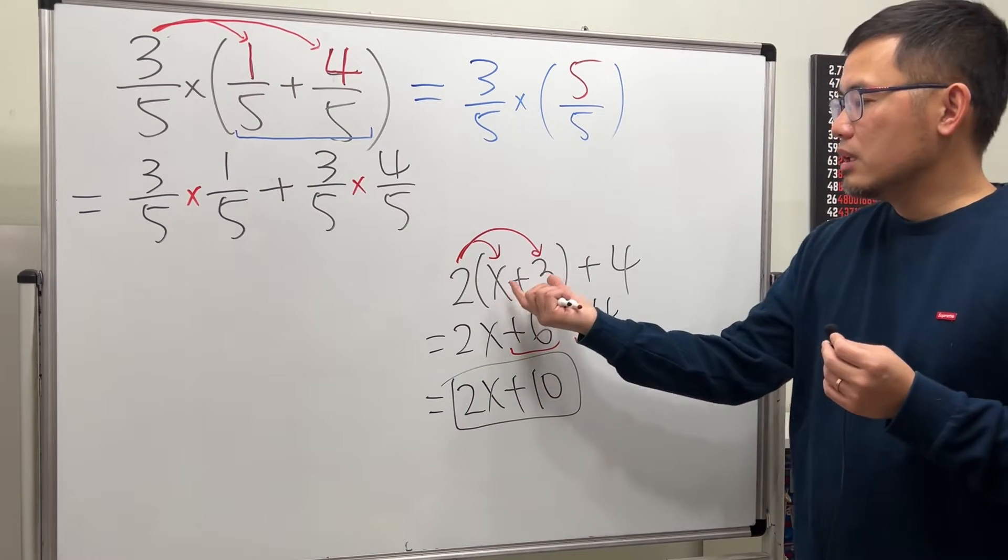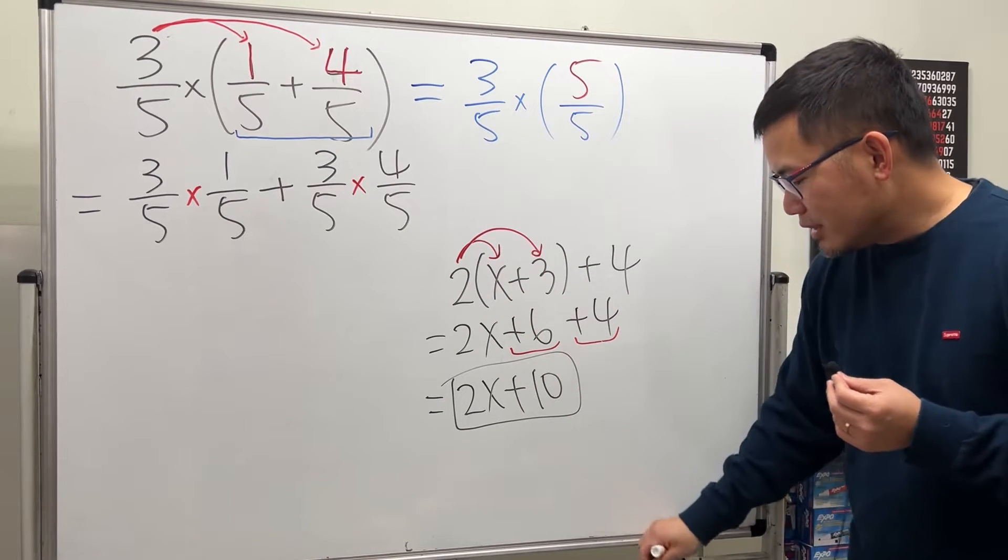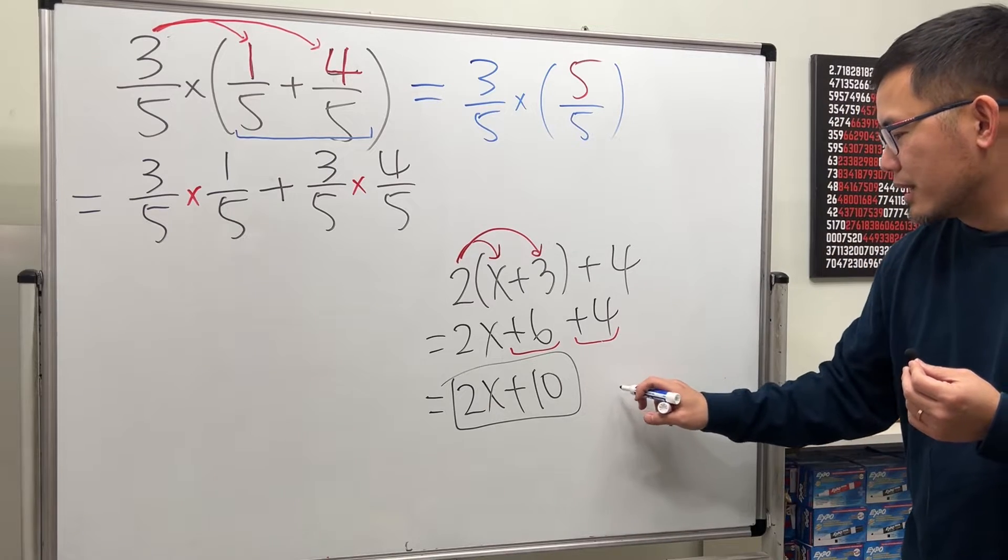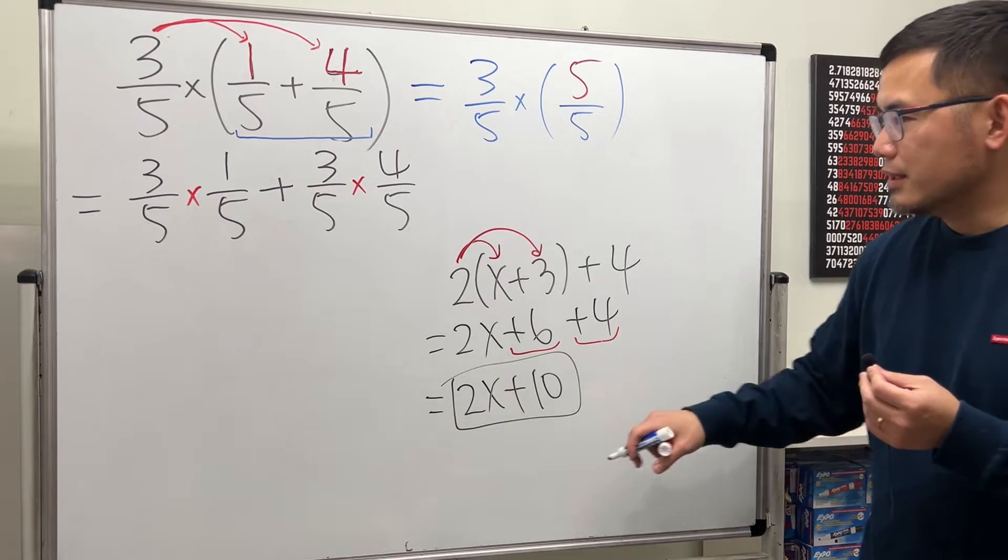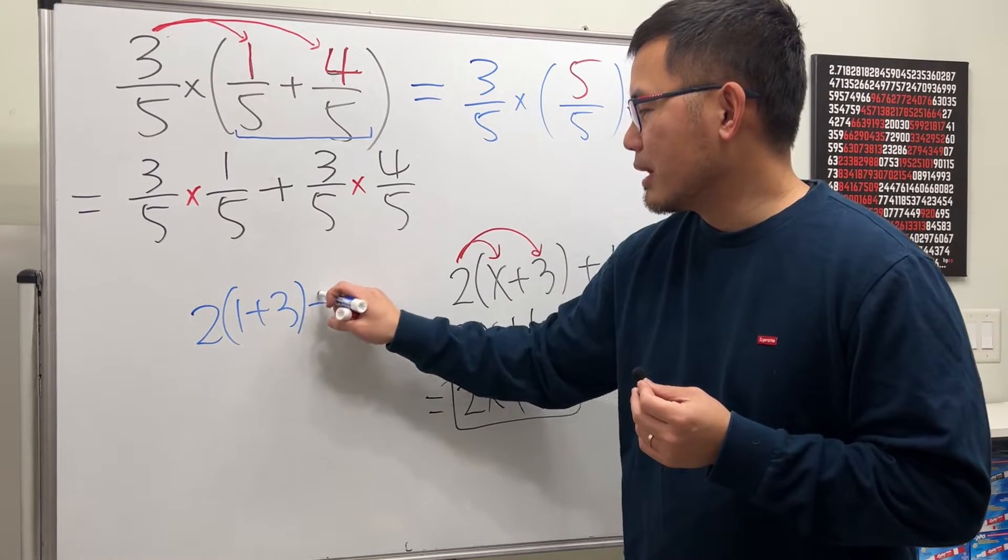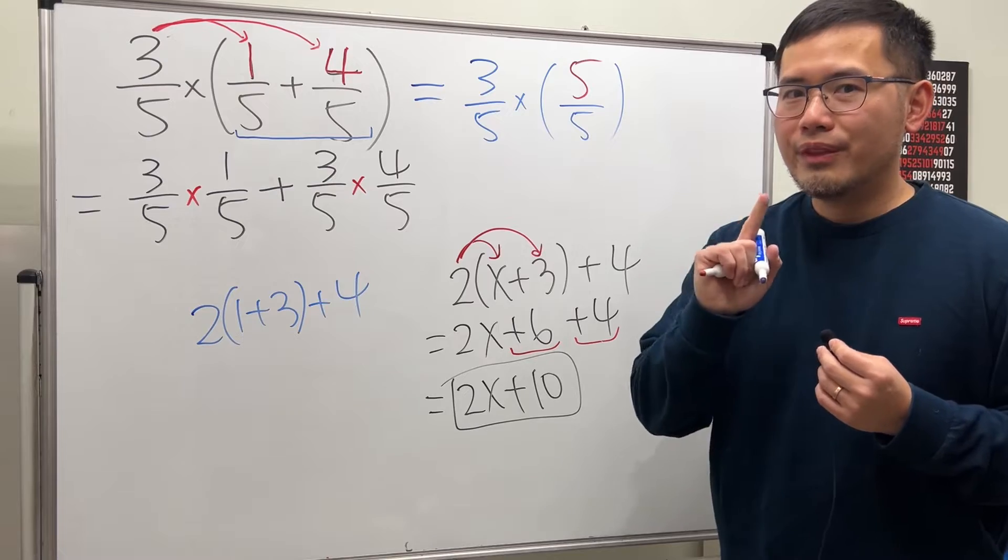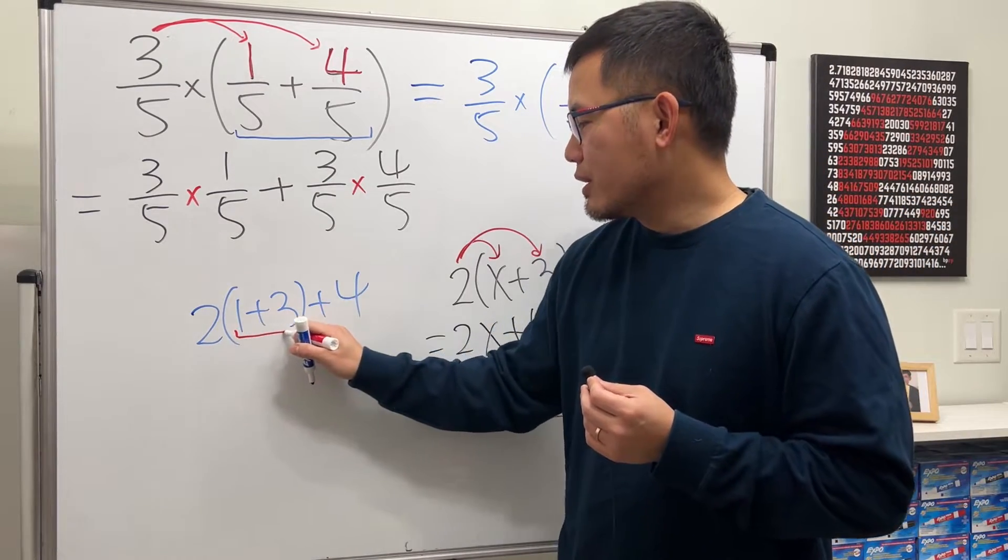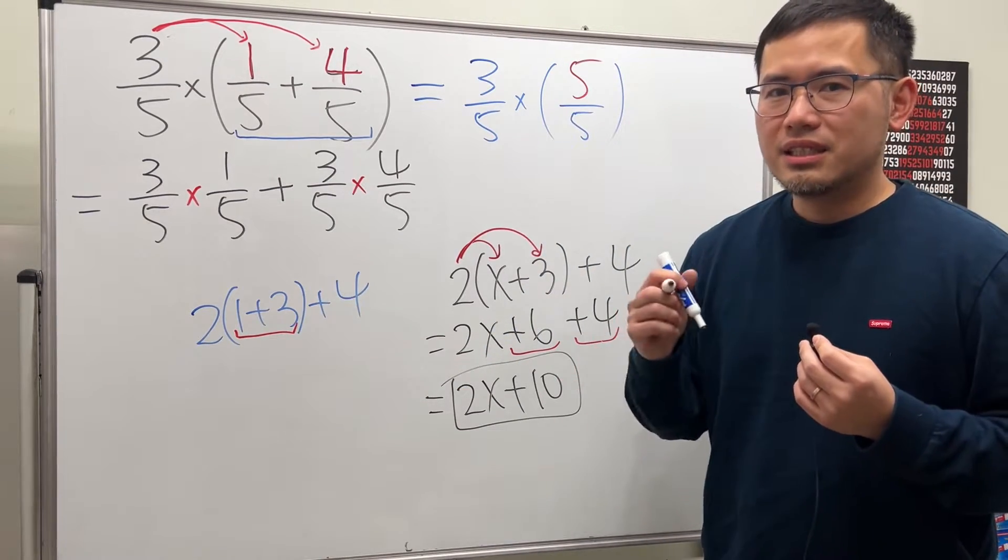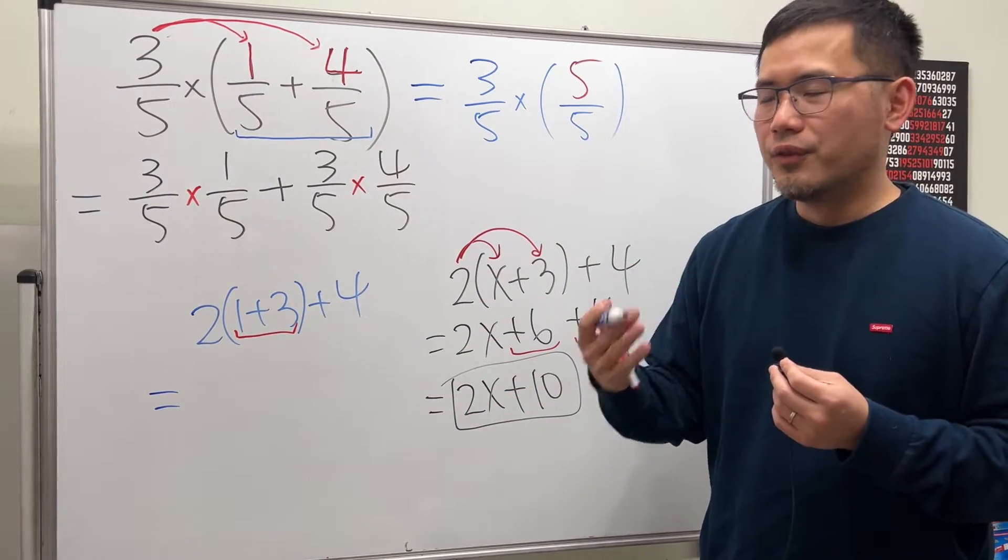But imagine if today, I just give you this question. Let's say if you have this question. 2 times 1 plus 3, and then plus 4. Do you really have to distribute? No. Because can we work out the inside? And the answer is yes. Because 1 plus 3 is doable, it's just 4.